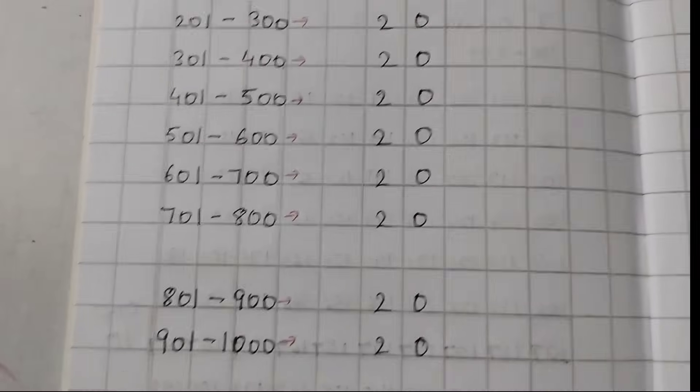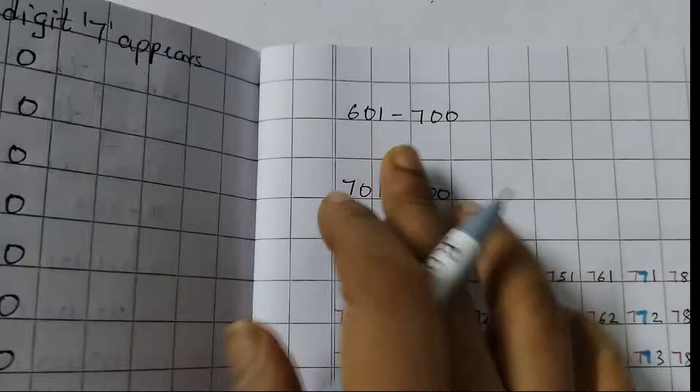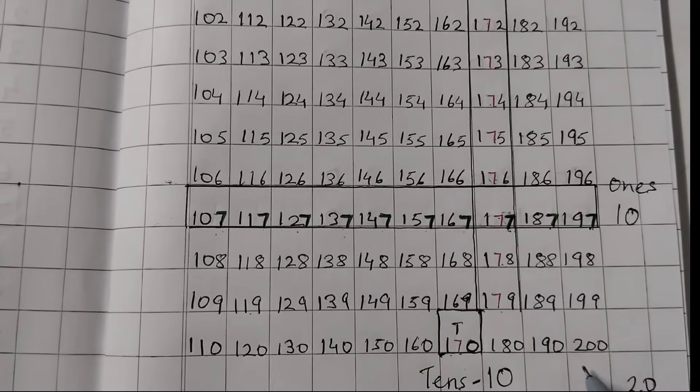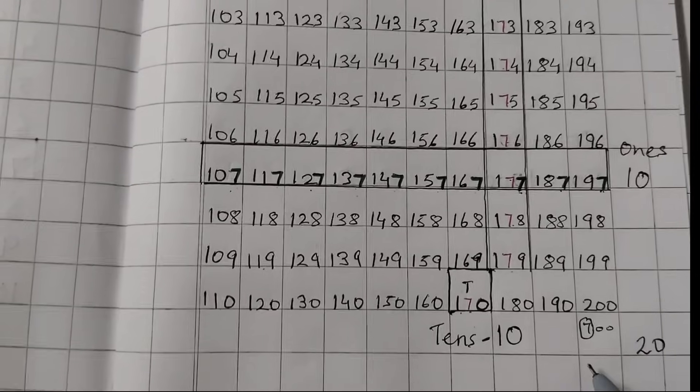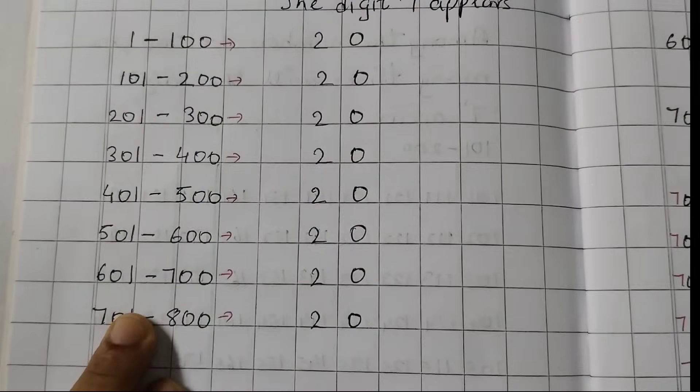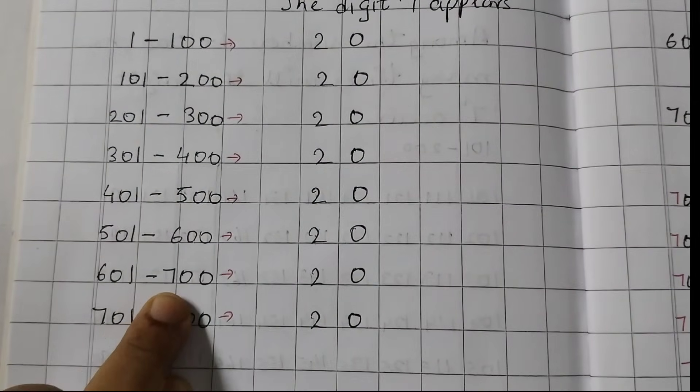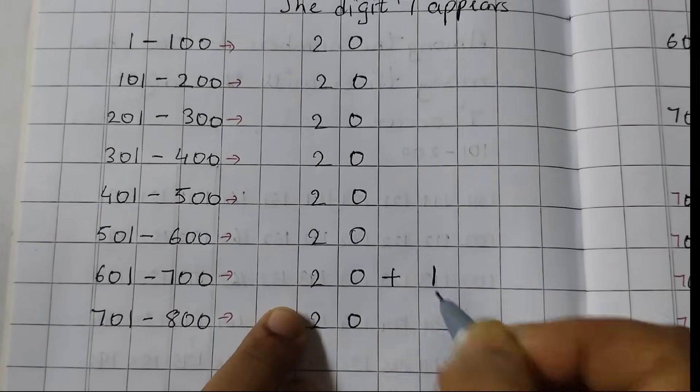Now, we will see from 601 to 700. If you go back to the table here, we will have instead of 200, it will be 700. So, 7 is in hundreds place. So, 1 extra 7 we will have here. Between 601 and 700, we will have 1 extra 7. So, we are going to write here, 601 to 700, 20 plus 1.